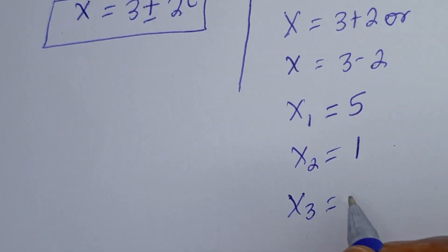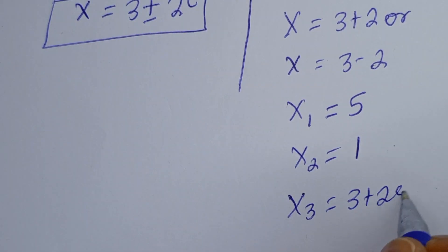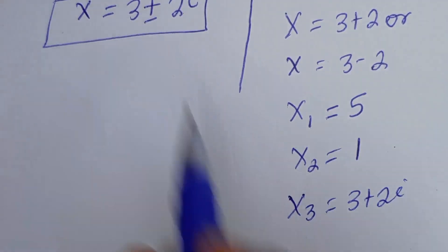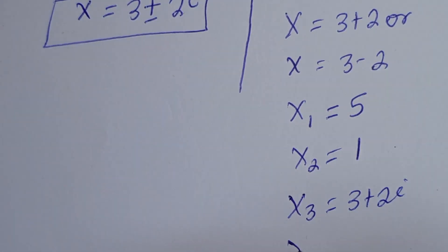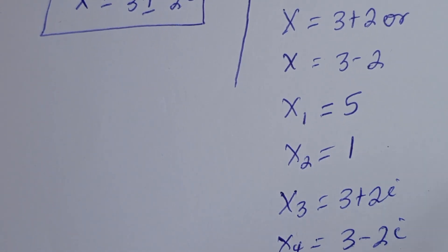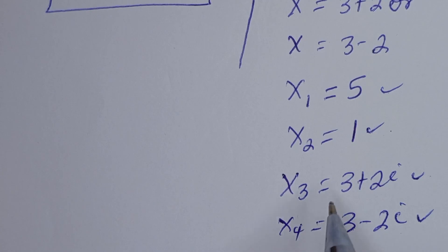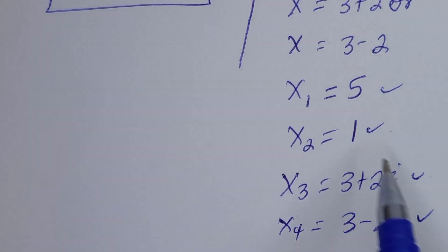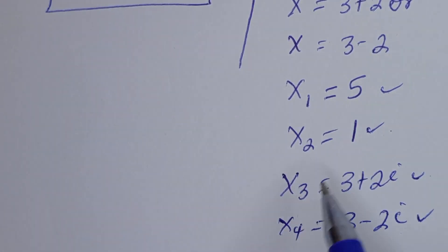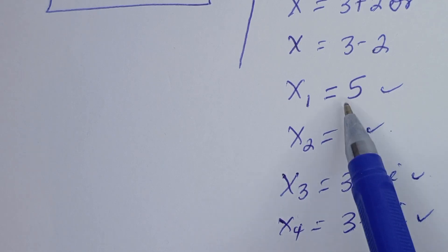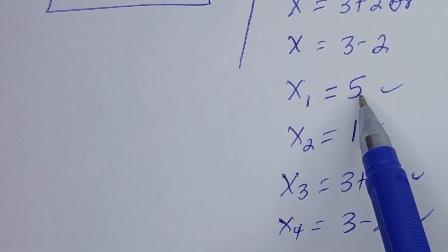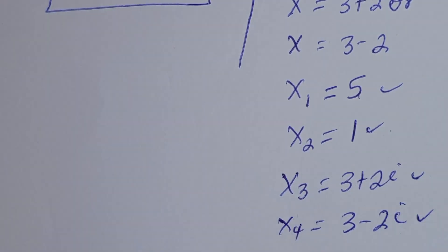So the four solutions are: S equals 3 plus 2i, S equals 3 minus 2i, and the two real solutions S equals 5 and S equals 1. We have two complex solutions and two real solutions. We are going to check the real solutions where S equals 5 and S equals 1.